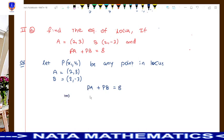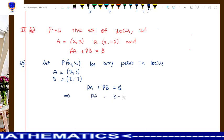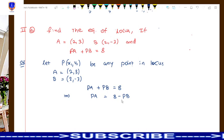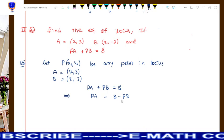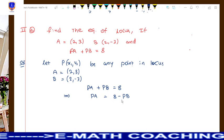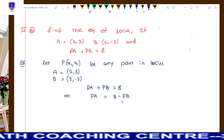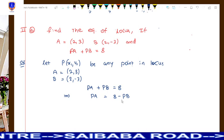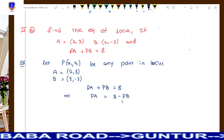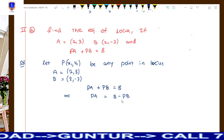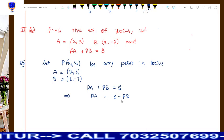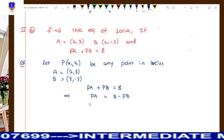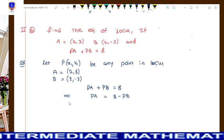This equation can also be written as PA = 8 minus PB. This is a shortcut technique to identify the locus of P. Students are advised to follow this solution method to arrive at the locus of P as early as possible.